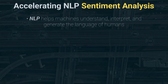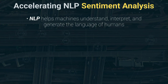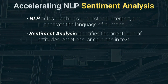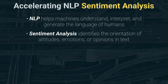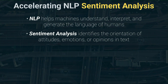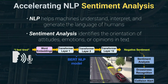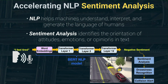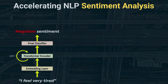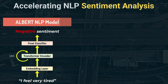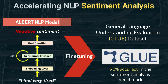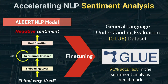Natural language processing, or NLP, is a sub-discipline of AI that helps machines understand, interpret, and generate the language of humans. Sentiment analysis is a sub-field of NLP that identifies the orientation of attitudes, emotions, or opinions conveyed in text. When combined with things like drowsiness recognition and collision alert, it has the potential to save lives. We demonstrate a transformer-based NLP model for sentiment analysis and show the performance improvement using our EPOC's SoC with Edge Bird, a specialized NLP accelerator. To perform sentiment analysis, we use Albert, a lightweight NLP model for mobile and edge applications, fine-tuned using the open-source Glue dataset, producing a 91% accuracy in the sentiment analysis benchmark.